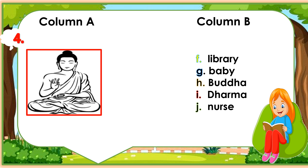Number 4: Look at this picture. What's this? Match this picture with a correct word in column B. F. Library. G. Baby. H. Buddha. I. Dharma. J. Nurse. Write the letter only.